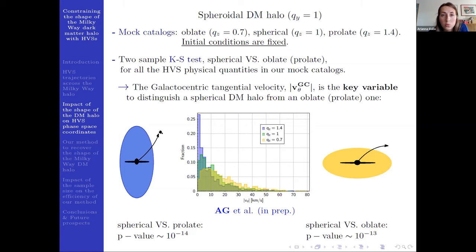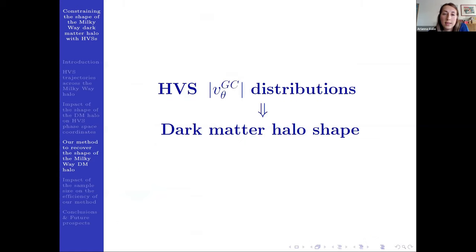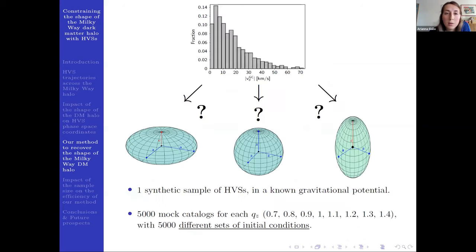So now we want to use HVS V_theta distributions to recover the shape of a dark matter halo through which hypervelocity stars have traveled. To do so, we need one synthetic sample of HVS generated in a known gravitational potential, and this will be replaced with real data.